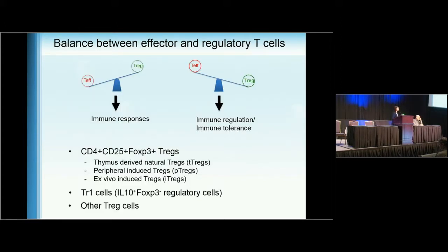In a simple sense, this diagram shows that in an immune environment, if there is higher or more significant effector T-cell function compared to Treg function, the immune response is active. However, if there are more Tregs or higher Treg function relative to effector T-cells, this results in immune regulation and immune tolerance. Recently, there are clinical trials manipulating Treg populations to modulate immune responses in autoimmunity and transplantation patients.